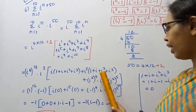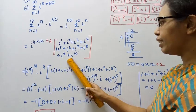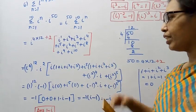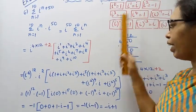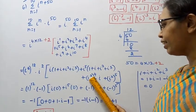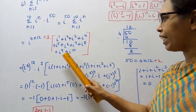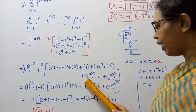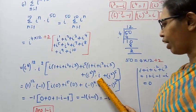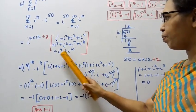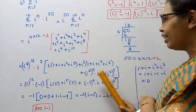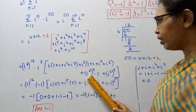i power 4: i square the whole power 4, 2 fours are 8, i power 8. i power 9: i square the whole power 4, and i power 8 upon 9, into i. i power 10: i square the whole power 5, 2 fives are 10, i power 10.